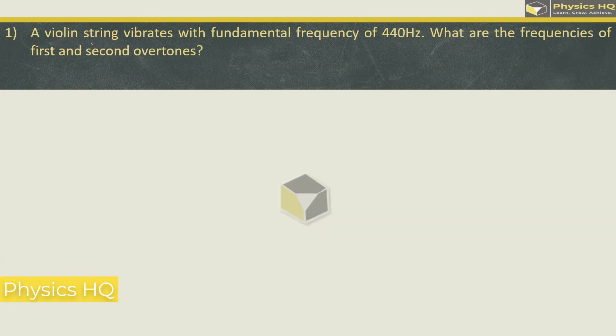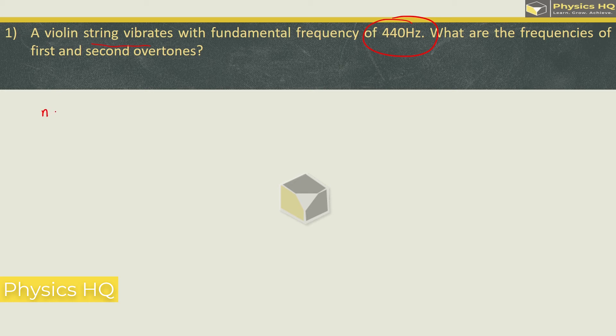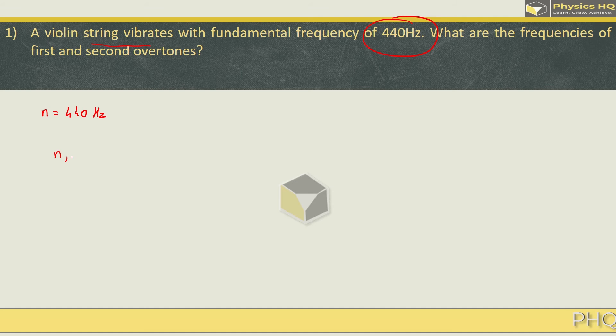A violin string vibrates with fundamental frequency of 440 Hertz. What are the frequencies of first and second overtone? For a violin, all the harmonics are present, therefore we will have frequency n, 2n, 3n, 4n, and so on.